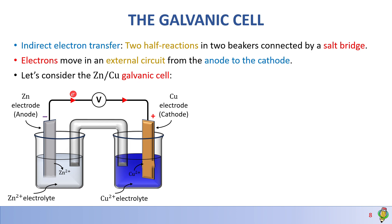As we can see in this animation, zinc is turning into solution while copper is becoming a metal. Consequently, the zinc electrolyte is going to become more concentrated while the copper electrolyte becomes more dilute because copper is turning into copper metal. The salt bridge is making sure that this reaction is possible, which we will discuss later on.